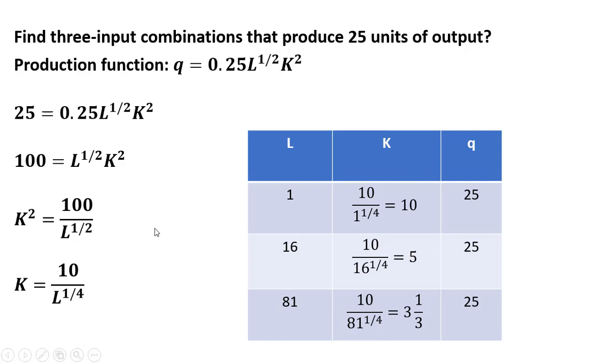And finally, another input combination. Let's let L equal 81. So if L is 81, K will equal 3 and 1 third. So when L is 81 and K is 3 and 1 third, we have yet another input combination that produces exactly 25 units of output. Okay, I hope you found this video helpful.